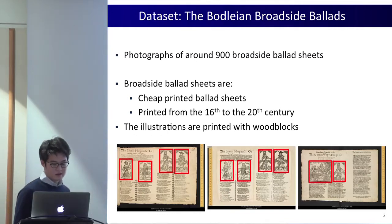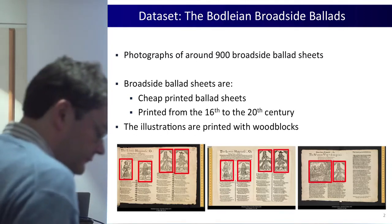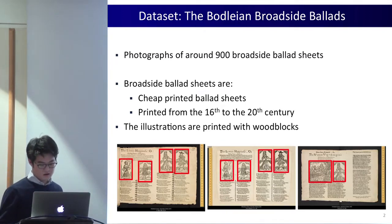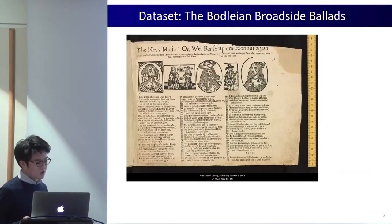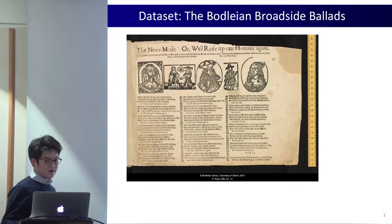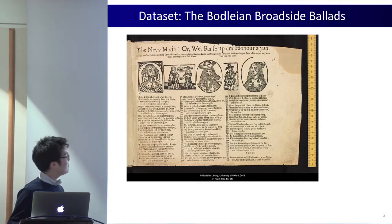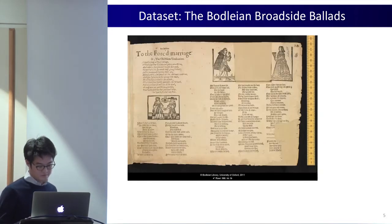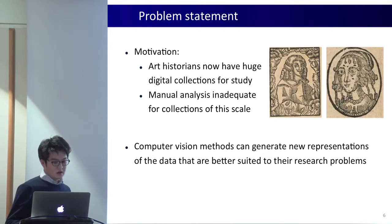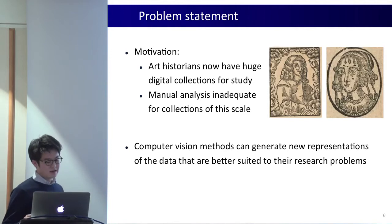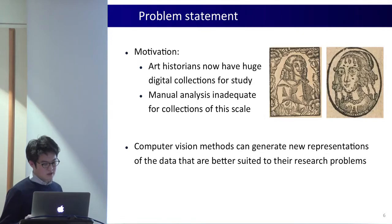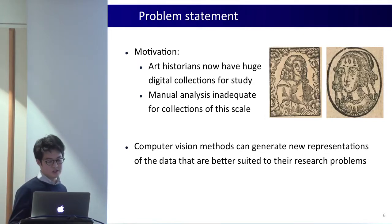Do take note that there are repeating instances of the same illustrations, such as the pairs I'm pointing out now. You're looking at a typical ballad sheet in our dataset and you can see that the illustrations appear in different sizes and locations. These illustrations are of interest to art historians who usually manually cut out the images and study them. However, computer vision techniques can generate new representations better suited to their research problems.